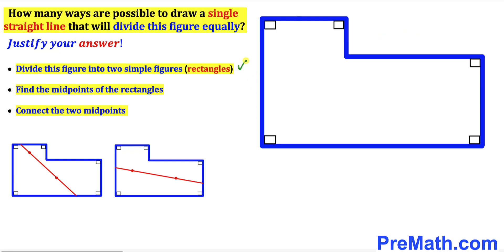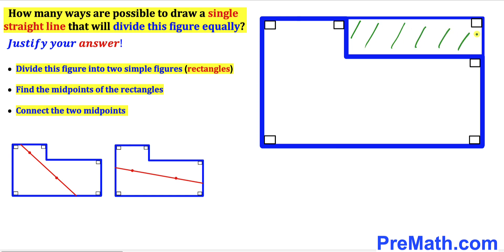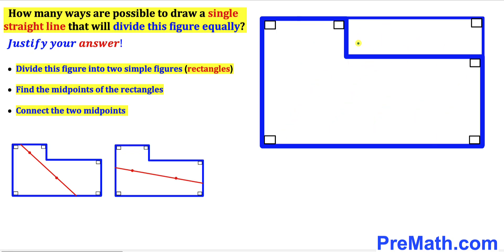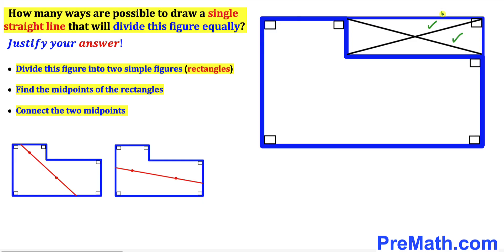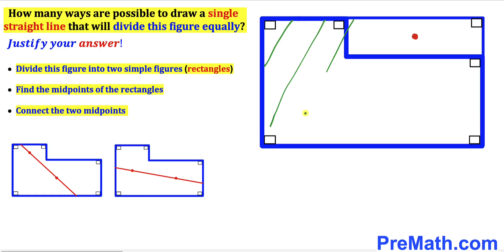Now I'll show our third option. This time we are going to think outside the box. I have constructed an additional rectangle to complete a whole big rectangle. Let's focus on this smaller rectangle and find its midpoint by drawing its two diagonals, which intersect at a point — this is the midpoint of this rectangle.